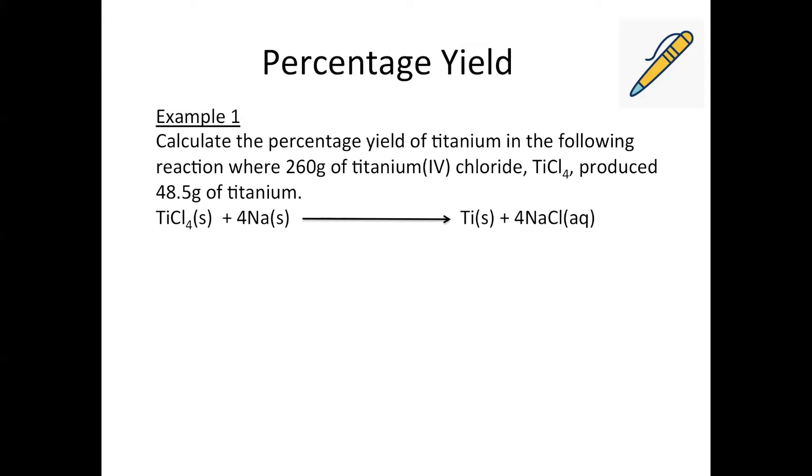So as you read through the question, what you want to do is identify the substances it's talking about, and there will usually only be two that you have to take into consideration. So this question is asking us to calculate the percentage yield of titanium. So then I would look for titanium, so that's here, so I'm going to put a question mark above that so that I remember that that's what I'm trying to calculate the percent yield of. And then it says where 260 grams of titanium for chloride, so this is titanium for chloride here, so we've got 260 grams of that, it produced 48.5 grams of titanium. So this number here is our actual yield.